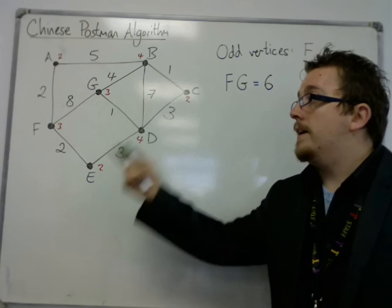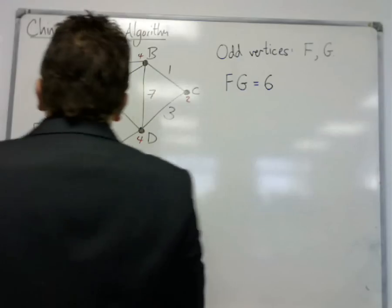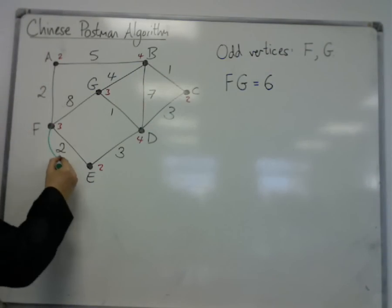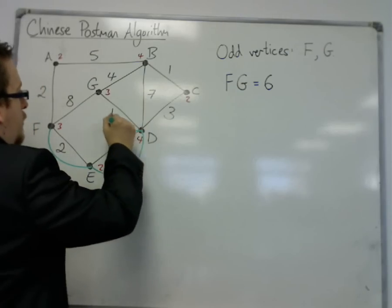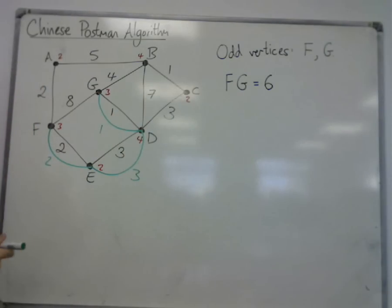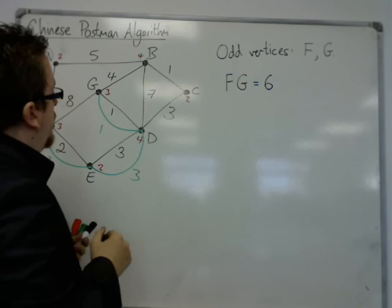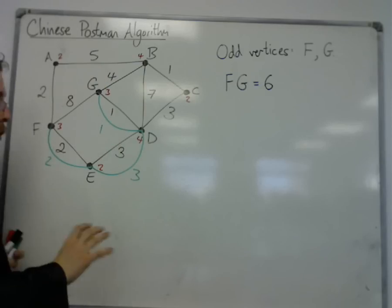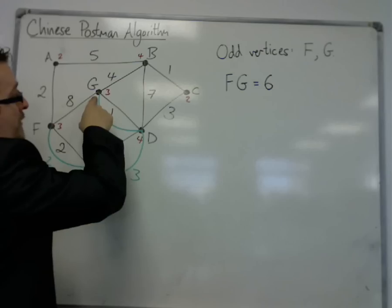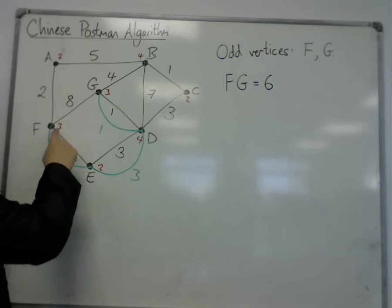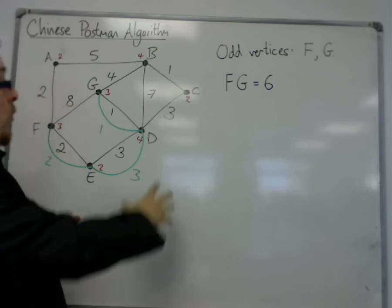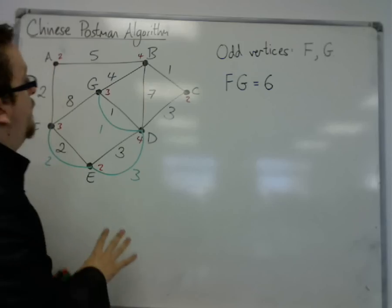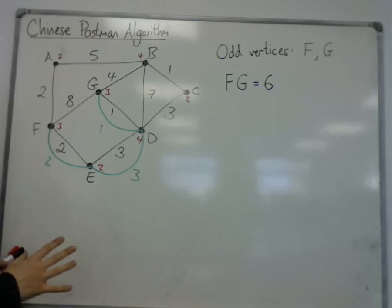So I'm going to go back along this edge, back along this edge, and then back along this edge. I put in repeated edges so that this graph is now Eulerian. This vertex now has degree 4, because there are 4 edges coming out of it - this is 4, that's 4, and this is now 6. That makes all of the vertices have even order, and therefore this graph is now Eulerian.